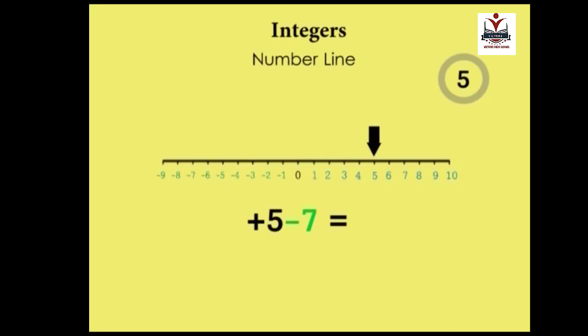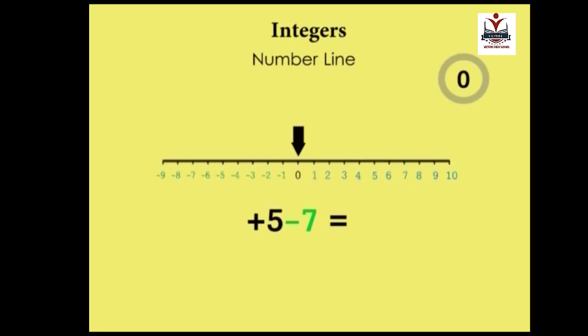And then we move seven steps towards the left: 1, 2, 3, 4, 5, 6, 7. So we are at the number negative 2. And so 5 minus 7 is equal to negative 2.